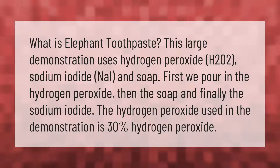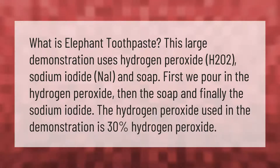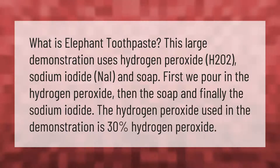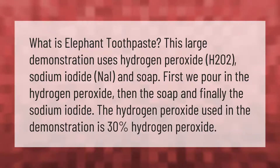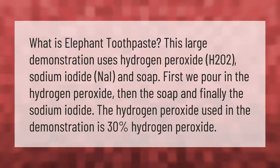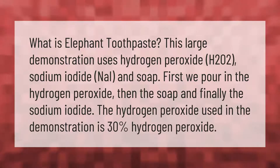What is elephant toothpaste? This large demonstration uses hydrogen peroxide (H₂O₂), sodium iodide (NaI), and soap. First we pour in the hydrogen peroxide, then the soap, and finally the sodium iodide. The hydrogen peroxide used in the demonstration is 30% hydrogen peroxide.